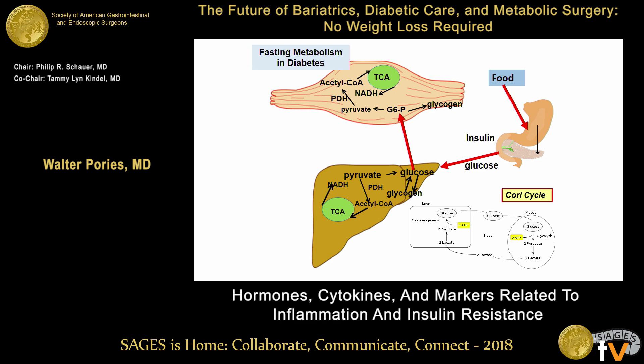Now look what happens in a diabetic. Glucose comes in, and then a very large amount of lactate comes back. That could only be true if there's a block either before entry into the TCA cycle in the muscle, and then when it gets back to the liver, it's blocked again. Because it's not utilized, the glucose goes up, the insulin goes up, and the lactate goes up.